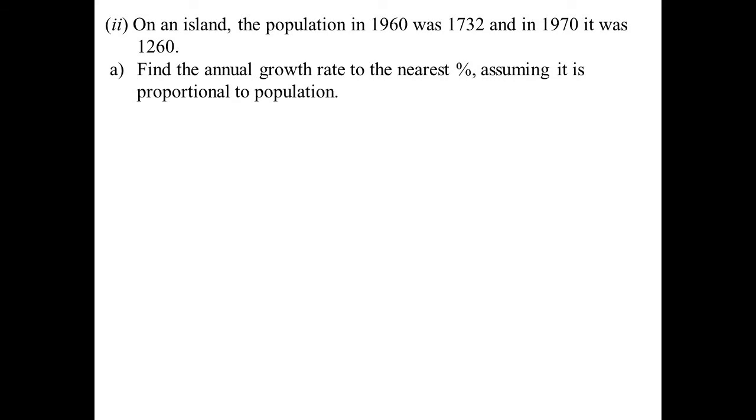We're on an island. In 1960, the population of this island is 1,732. So it's not a large island, small island there. And clearly, they don't like each other on this island. Because in 1970, the population is now 1,260. Let's find out what the annual growth rate, although we're actually expecting it to be a decay rate because it's getting smaller.